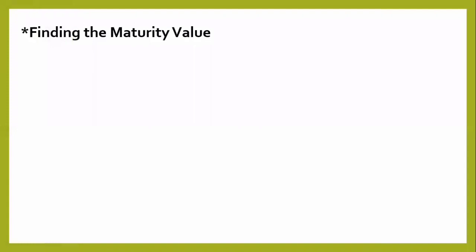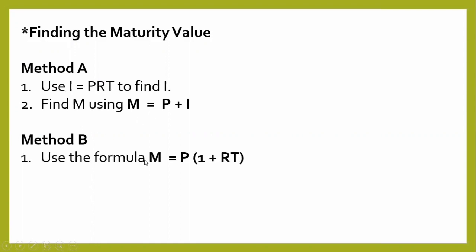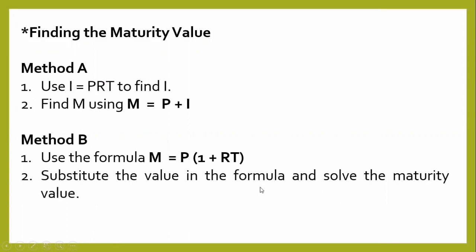In finding the maturity value of a loan, observe two methods. For Method A: first, use I equals PRT to find the interest; second, find M using M equals P plus I. For Method B: first, use the formula M equals P times the quantity 1 plus RT; second, substitute the values in the formula and solve for the maturity value.